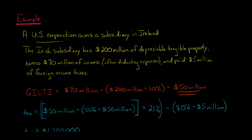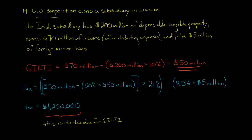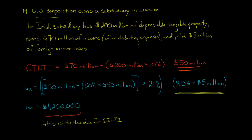Now, how much tax is imposed on that $50 million of GILTI? We take the $50 million and subtract half — $25 million — leaving $25 million taxable. $25 million times 21% equals $5.25 million. Then we subtract foreign tax credits: they paid $5 million of foreign taxes, but they only get 80% of that as a credit, which is $4 million. So $5.25 million minus $4 million equals a tax of $1.25 million. This is the tax the U.S. company must pay based on this GILTI income — even if the Irish subsidiary makes no distribution to the U.S. company.